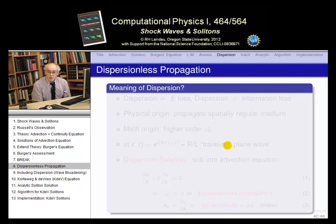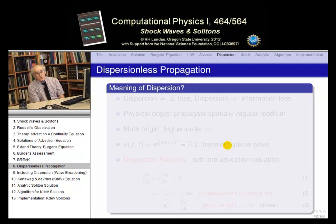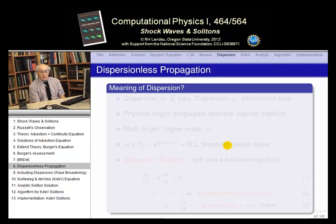Let's discuss dispersion. It turns out that in order to form solitons, we have to understand dispersion and we have to have dispersion. Often people think friction and dispersion are bad things — not the ideal world. But the truth is both friction and dispersion are actually stabilizing forces in nature. They're very important. Many of the things we count on wouldn't exist without them.